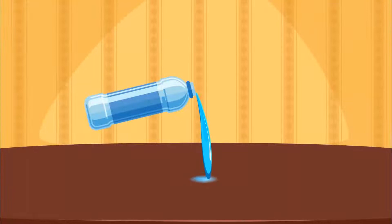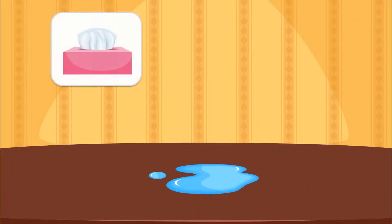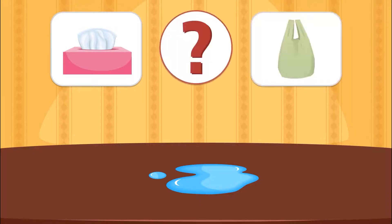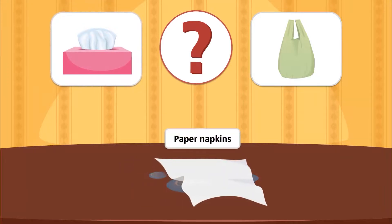Faddis spilled water on the table. What can he do to dry the water? Should he use the paper napkins or the plastic bag? Excellent! Faddis will use the paper napkins because they can soak up the water.